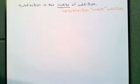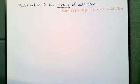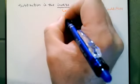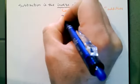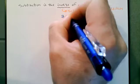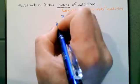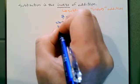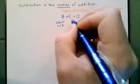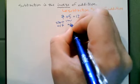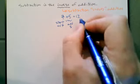I want to talk about subtraction as the inverse of addition. The way we want to think about it is that subtraction undoes addition. So if I start with 7 and I do a plus 5, I end up at 12. Start with 7, then add 5, we end up at 12.